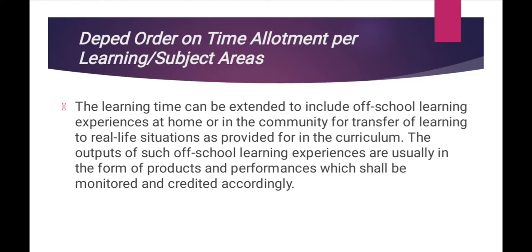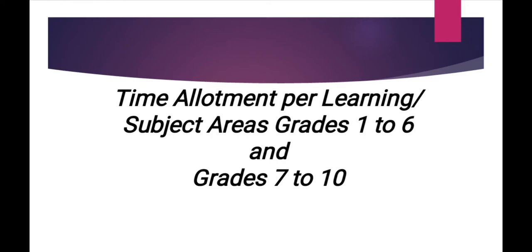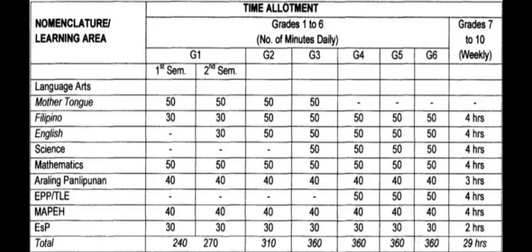Now let's find out how much time is allotted to each subject in grade 1 to grade 6 and grade 7 to grade 10. Under the Mother Tongue subject, the time allotted is the same — 50 minutes daily. For the next subject, Filipino: from grade 1, it only has 30 minutes daily, but from grade 2 to grade 6, it increases by 20 minutes, for a total of 50 minutes daily.